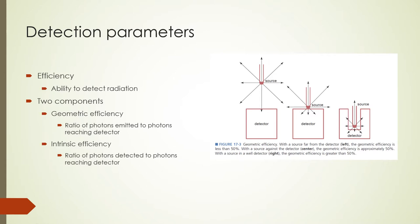In the first image, geometric efficiency is lowest because radiation is emitted in a 360-degree direction, but only a small amount reaches the detector. In the second image, the geometric efficiency is close to 50% because the detector intercepts about half of the emitted radiation. In the last image, a well-type geometry is used. In this arrangement, the detector intercepts more than 50% of the emitted radiation. We shall see this type of geometry when we learn about well counters later.